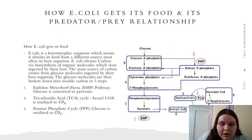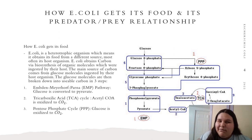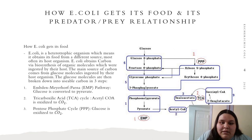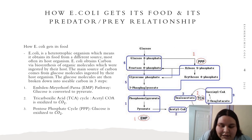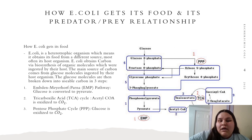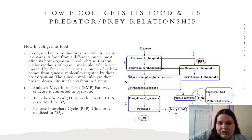The first step, also known as EMP — it's a long name so I'm not going to say it — basically involves glucose being converted to pyruvate. As you can see here on the right, glucose all the way down is converted into pyruvate, which is the first step also known as EMP.